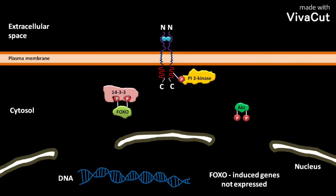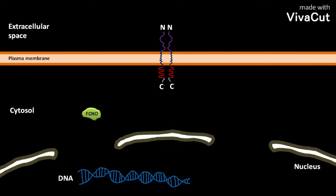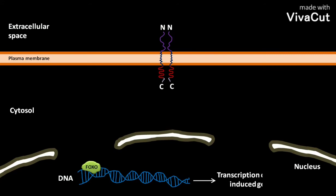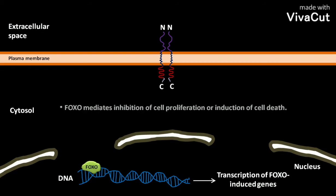FOXO-induced genes cannot be expressed. But in the absence of growth factor, the cytosolic FOXO translocates into the nucleus and binds to its target genes. As a result, transcription of FOXO-induced genes occurs. FOXO mediates inhibition of cell proliferation or induction of cell death.